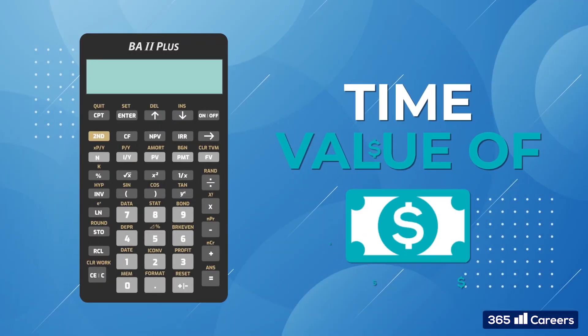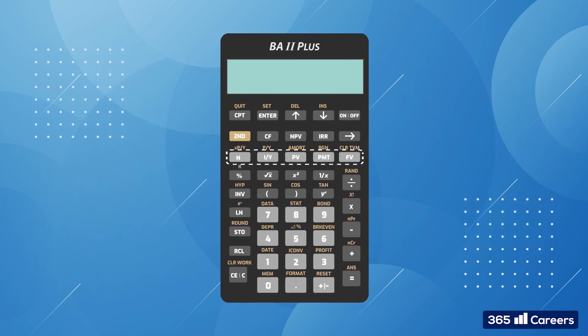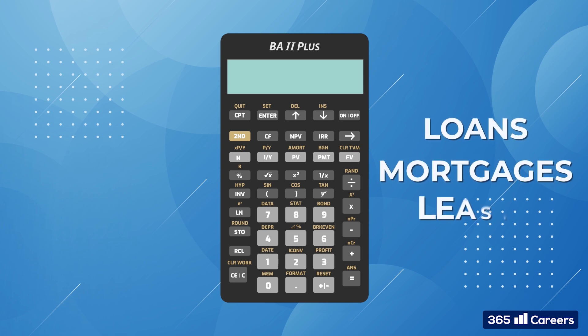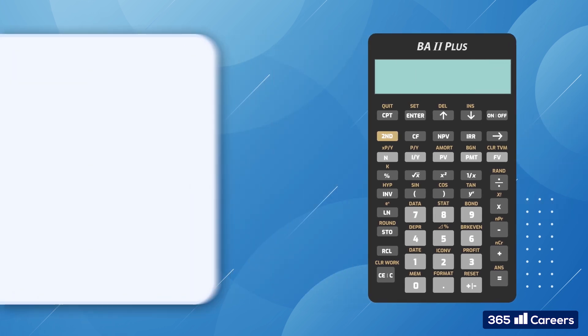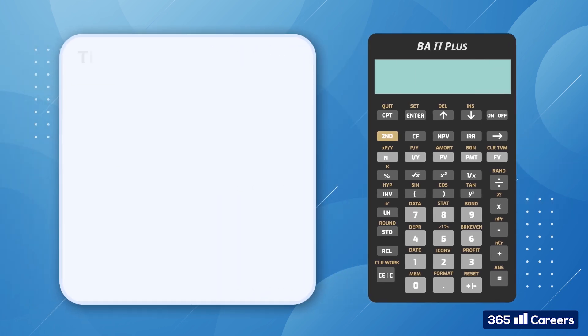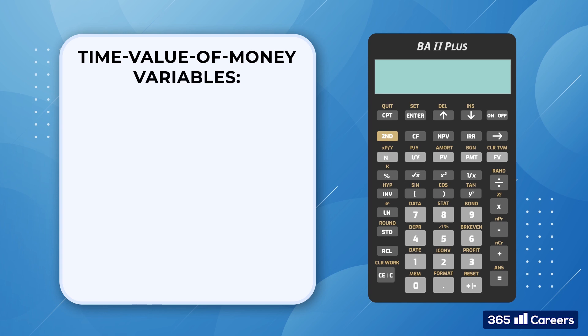Welcome back. In this lesson, we'll examine the Time Value of Money, TVM, worksheet. It consists of five variables that we use to solve problems with equal and regular cash flows, such as loans, mortgages, and leases. We'll examine each of these situations in depth throughout the lesson.